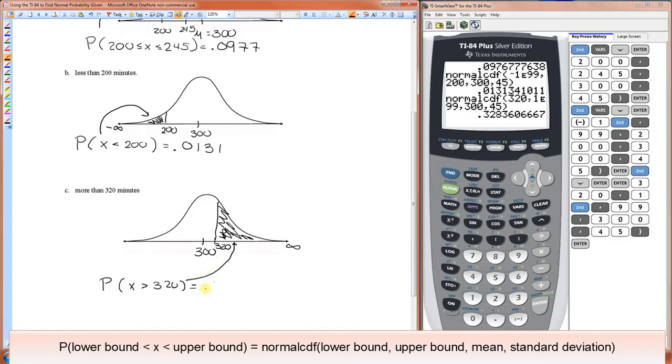So 0.328. That's it. So the things that you need to be able to do a normal probability when you know the mean and the standard deviation is always the lower bound, the upper bound, the mean, and the standard deviation, and that's it.